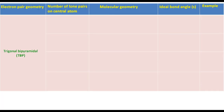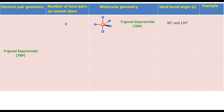For a molecule with trigonal bipyramidal electron pair geometry having zero lone pairs on the central atom, the molecular geometry will also be trigonal bipyramidal. The ideal bond angles are 90 and 120 degrees. PCl5 and SF5- are examples. In general, always put lone pairs on the equatorial position if the number of electron pairs is odd, like in the case of trigonal bipyramidal and pentagonal bipyramidal geometry, and put lone pairs on the axial position if the number of electron pairs is even, like in octahedral electron pair geometry.